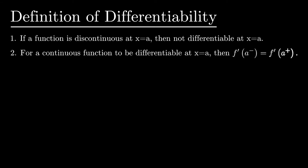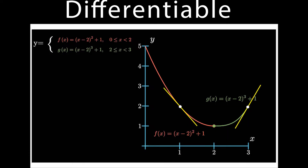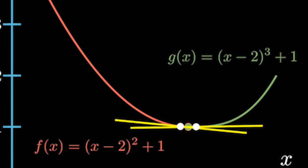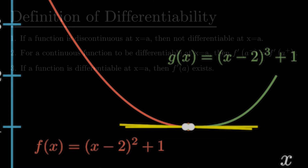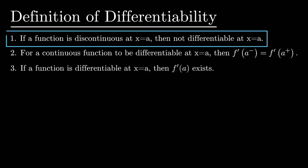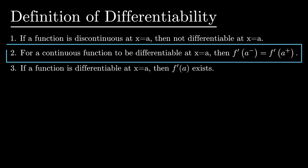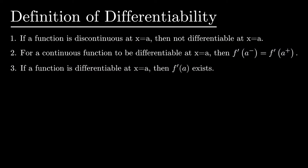For a continuous function to be differentiable at x equals a, the derivative at this particular point has got to match up from the negative side and the positive side. You can think of this as the curve has got to be smooth along the entirety of it. Our third part is if a function is differentiable at x equals a, then the derivative exists. We're going to be mainly focusing on the first two points of this definition.